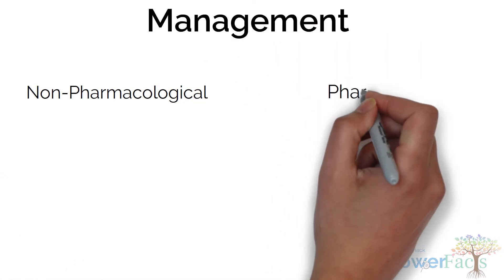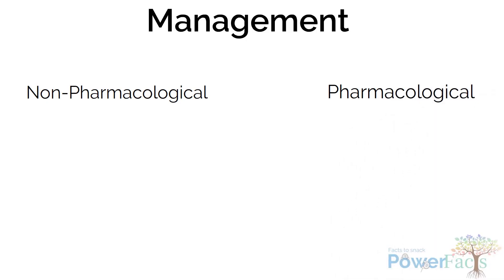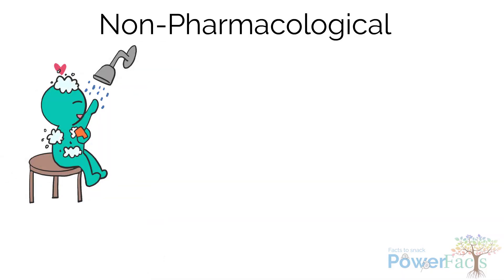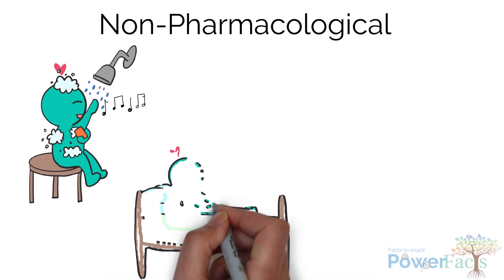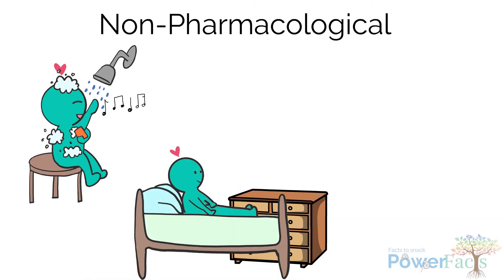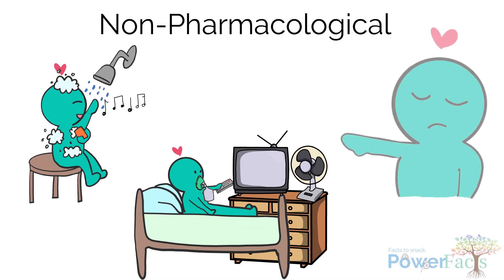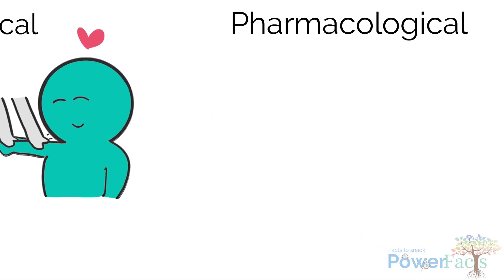Now let's look at how we can manage patients with dyspnea. There are non-pharmacological and pharmacological measures. Some non-pharmacological measures include modifying activities to help patients conserve energy, such as sitting on a commode while showering instead of standing. We can also modify the environment, such as sitting patients upright supported by pillows, or providing a fan to relieve breathlessness, placing patient's belongings within reach, providing oxygen when necessary, and providing touch and comfort.